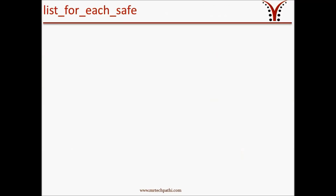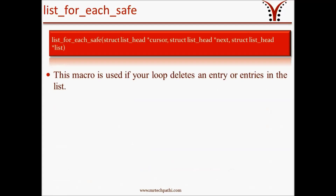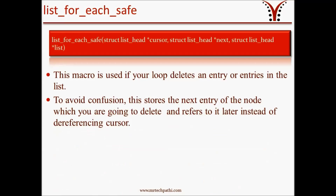Coming to our first topic, the list_for_each_safe macro. This macro is used only if your loop may delete an entry or entries in the list. To avoid confusion, it stores the next entry of the node which you are going to delete and refers to it later instead of dereferencing the cursor.